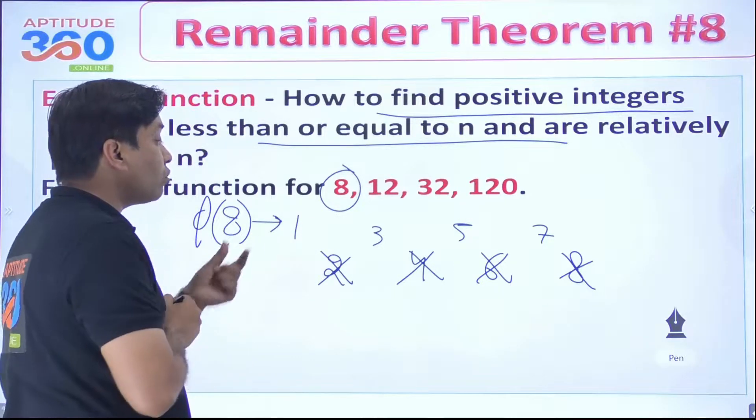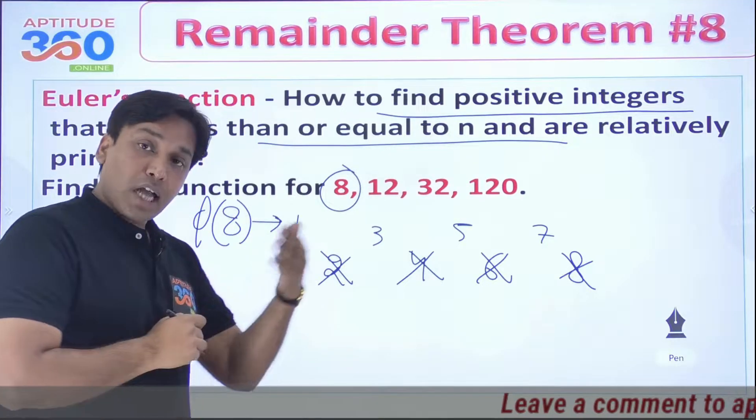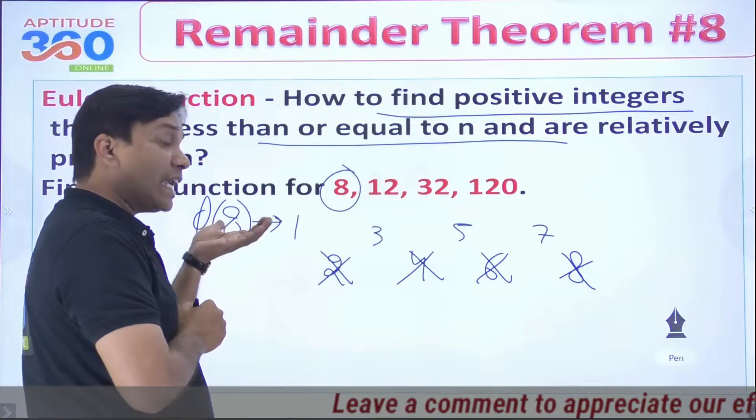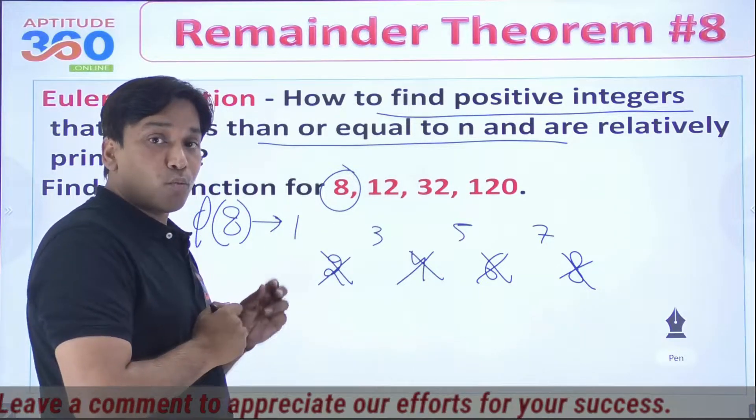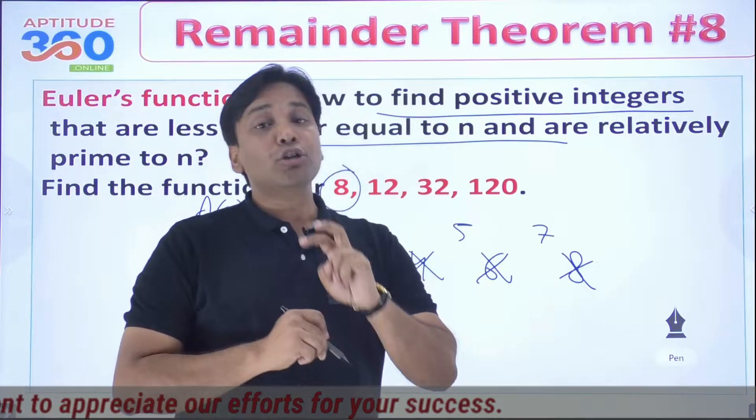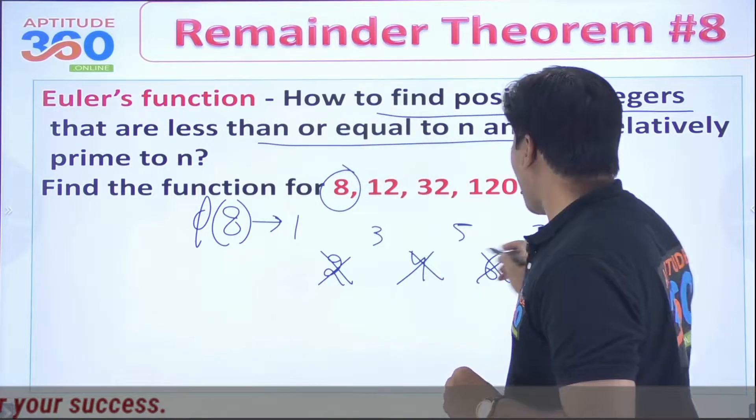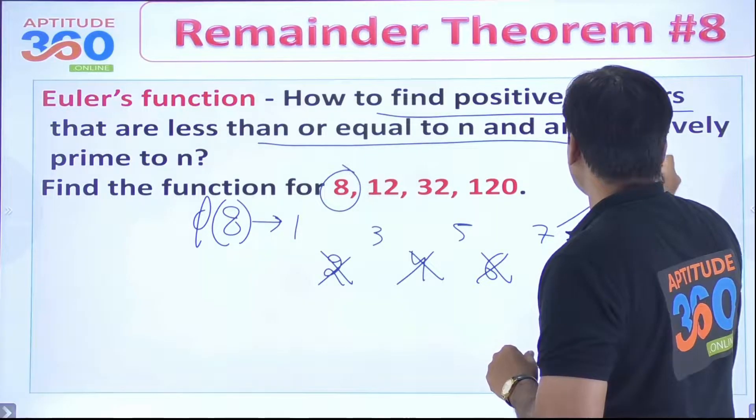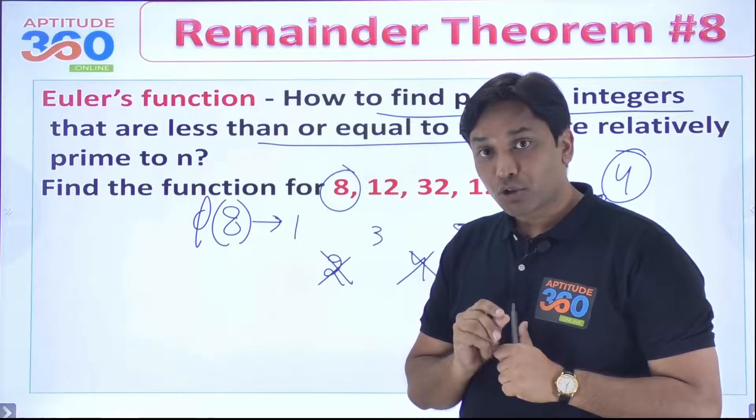Do you understand that 1 and 8 they don't have any factor in common, 3 and 8 they don't have any factor in common, similarly 5 and 8 don't have any factor in common. These four numbers I have written here, 1, 3, 5, 7, they actually do not share any factor with 8 and hence we would be able to say that Euler's function for 8 is going to be 4. Does this make sense to you?